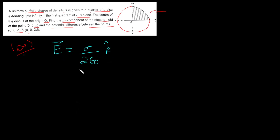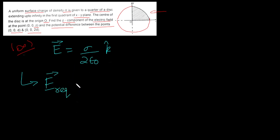So the E vector for the full sheet is sigma by 2 epsilon naught. But because we have only one-fourth of the sheet existing, the value will be E divided by 4. So the required E is equal to sigma by 2 epsilon naught, divided by 4, which gives sigma by 8 epsilon naught, in the k-cap direction.